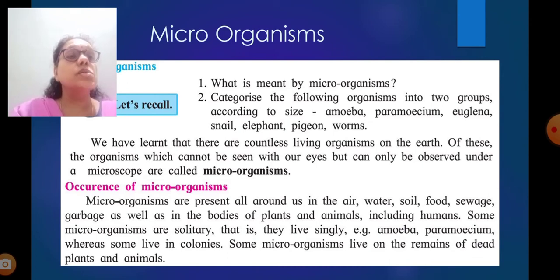Occurrence of microorganisms: they are present all around in the air, water, soil, food, sewage, garbage, as well as in the bodies of plants and animals including humans. Some microorganisms are solitary, that is they live singly, example amoeba, paramecium, whereas some live in colonies. Some microorganisms live on the remains of dead plants and animals.